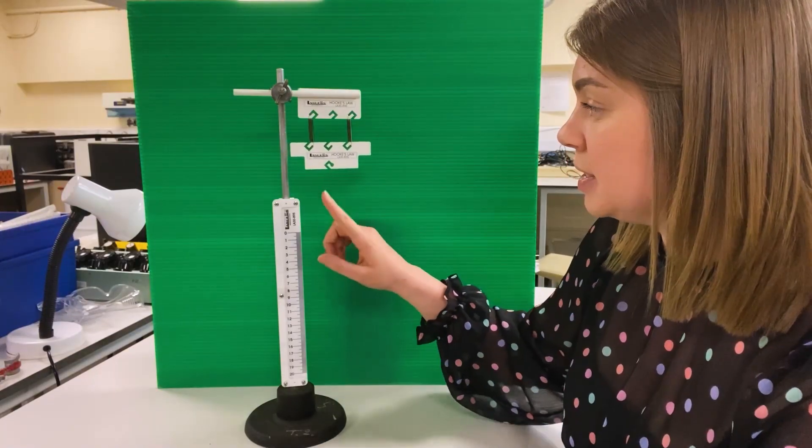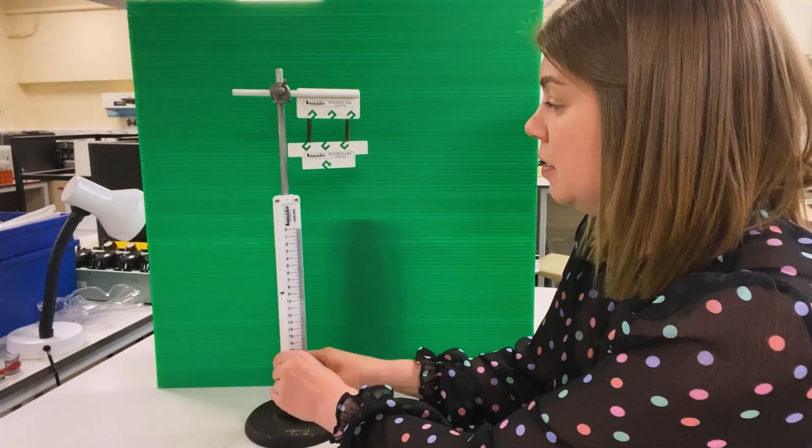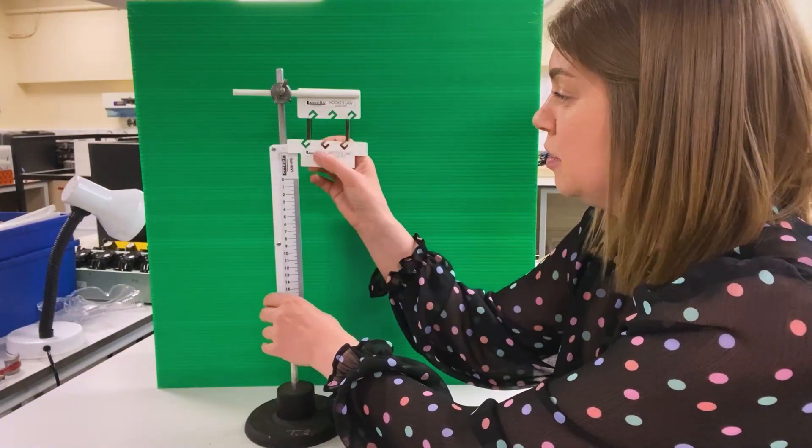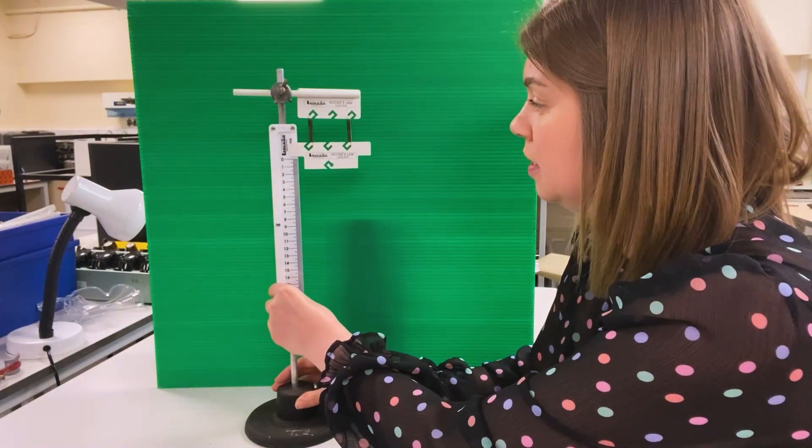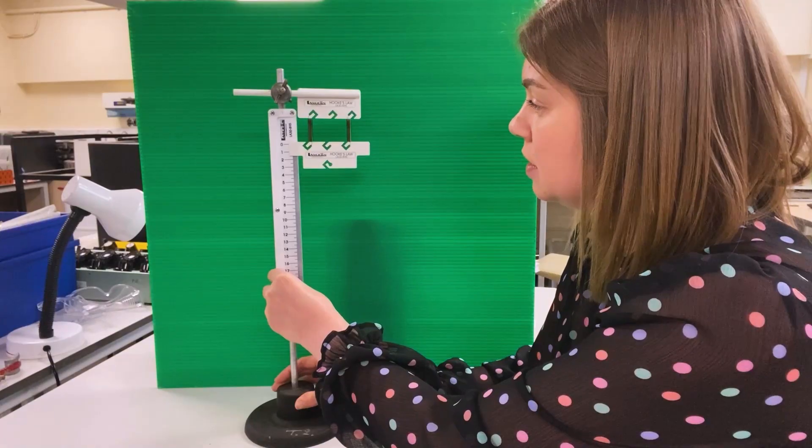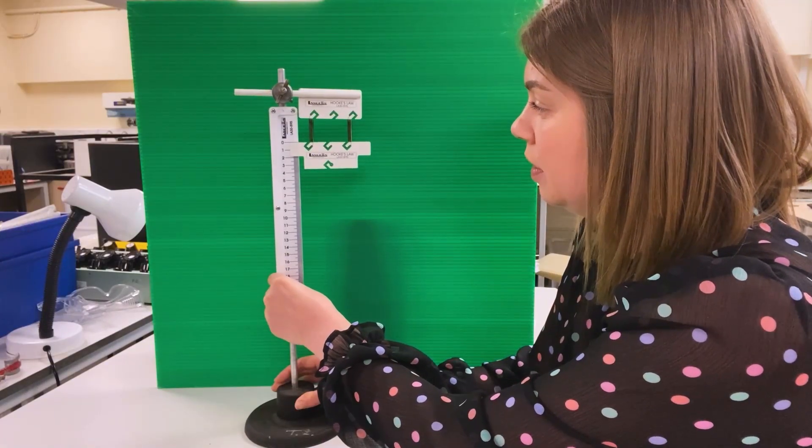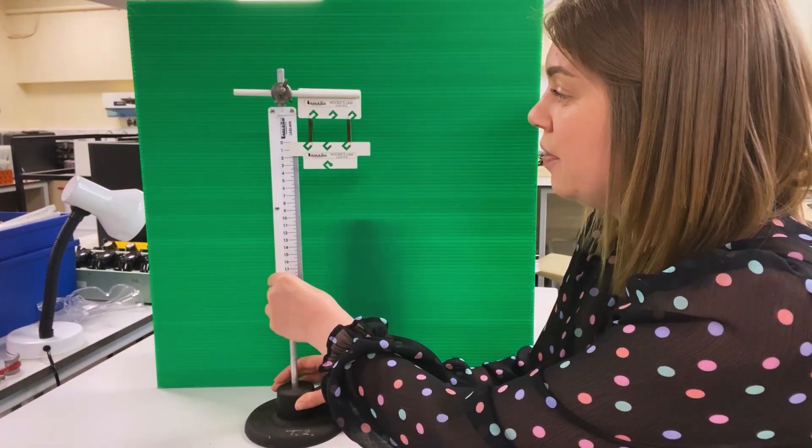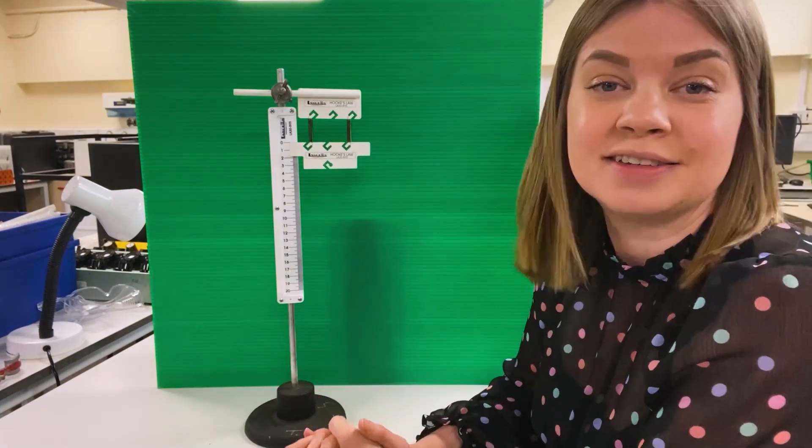So I need to move my scale up so that it's zeroed and remember that needs to fit inside of the scale so I'll just run this to the top. Here we go. So now again I'm ready to add my masses and start collecting data.